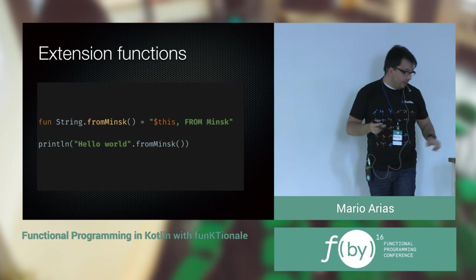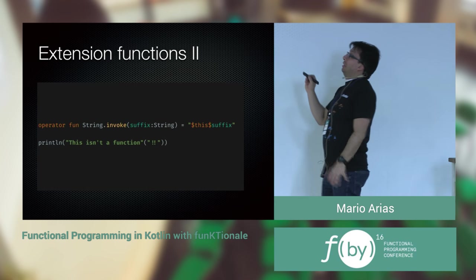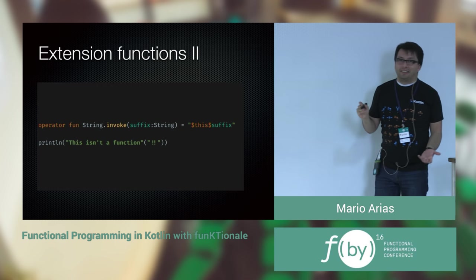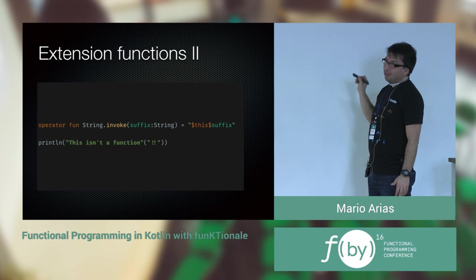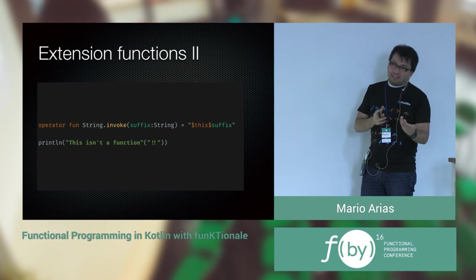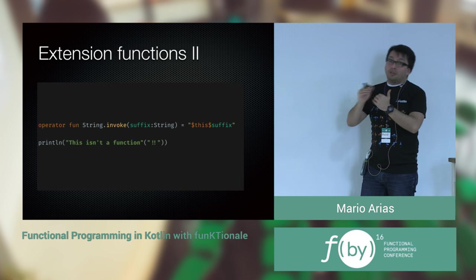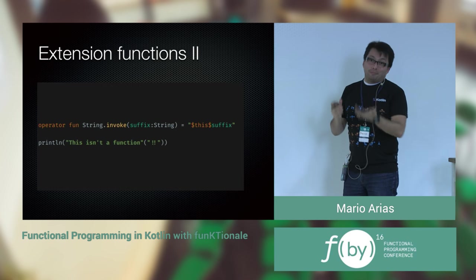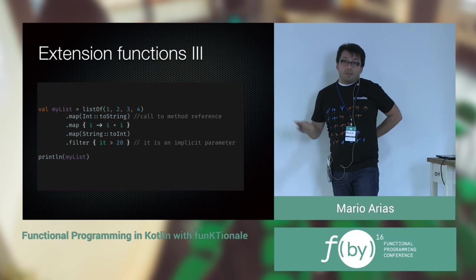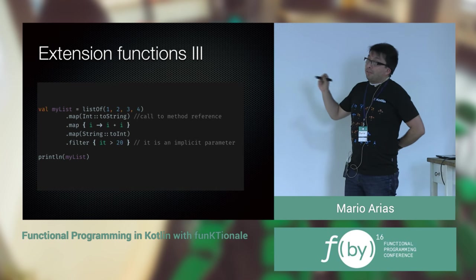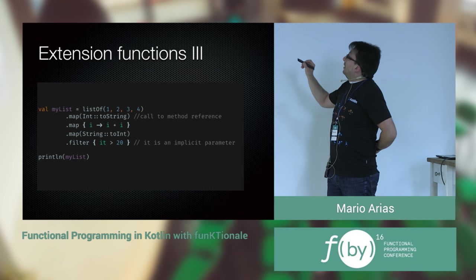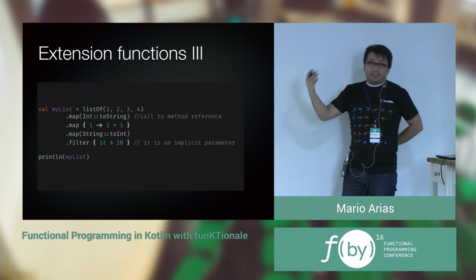You could create interesting things like adding an invoke operator to String, so you could call a string as if it were a function — it's not a function, but it looks like one because you added that invoke operator to the String class. You can create DSLs like this. It looks unusual, but it's possible. And extension functions are actually used in the Kotlin standard library — all the functional operators you'd expect on collections, like map, flatMap, and filter, are implemented using extension functions.